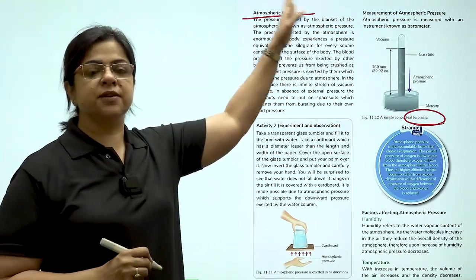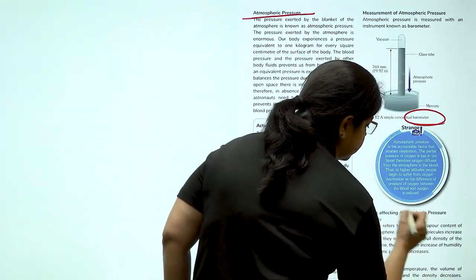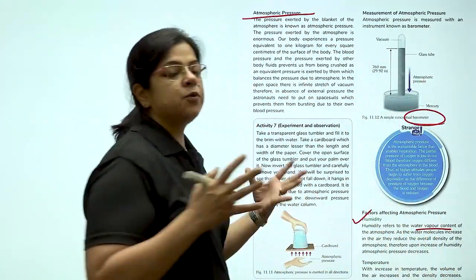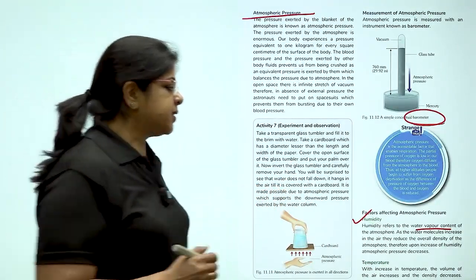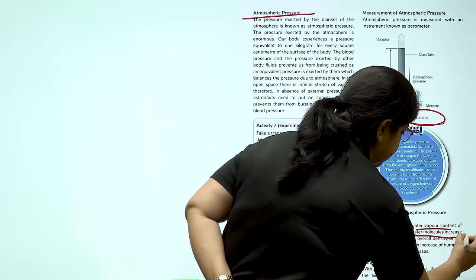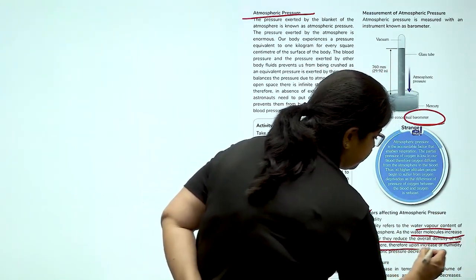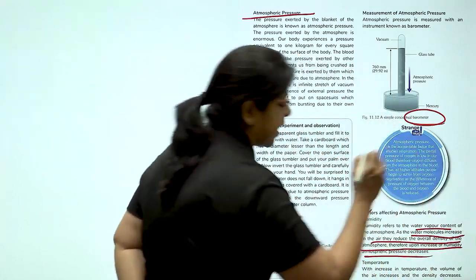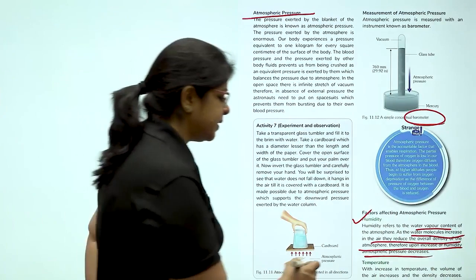Now, what are the different factors that affect this atmospheric pressure? The first is humidity. Humidity means the water vapor present in the atmosphere. Now, as the water molecules increase, they reduce the density of air. Therefore, upon increase in humidity, atmospheric pressure decreases.